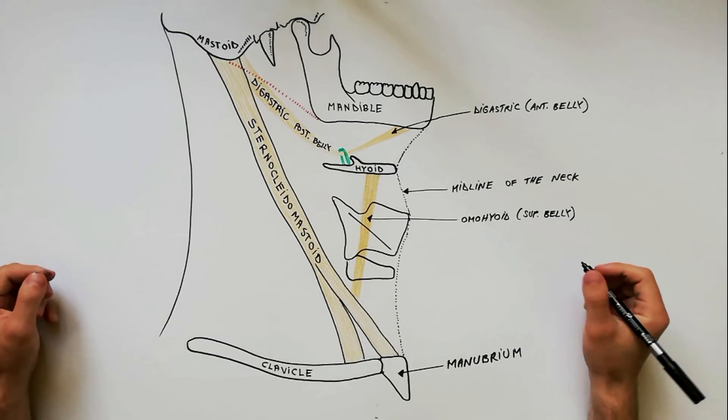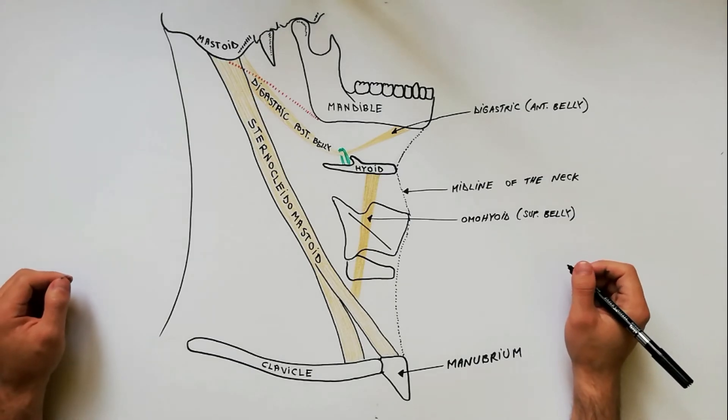Now we are in a position to indicate the four subdivisions of the anterior triangle of the neck.